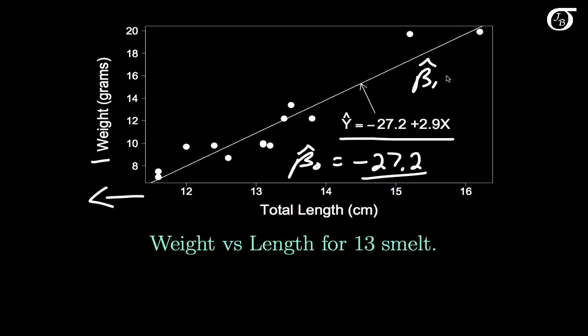Beta1 hat, the sample slope, is 2.9. And this is the estimated change in the mean of y for a 1 unit increase in x.